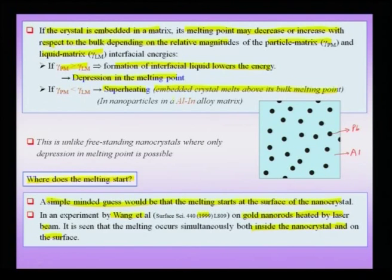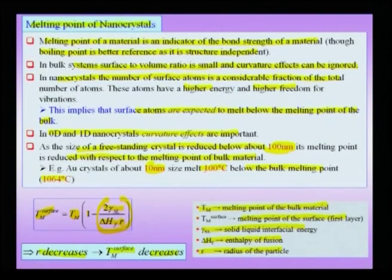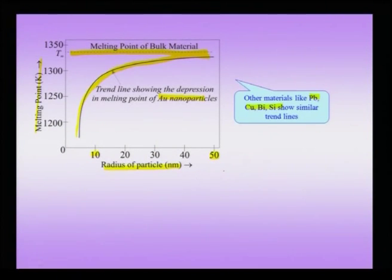Superheating is observed in, for example, an aluminum-indium alloy matrix. To summarize the slides on melting: free-standing nano crystals show a depression in the melting point — about 100 degrees, or roughly a 10 percent reduction at 10 nanometer size. The current understanding is that the entire nano particle melts at a single temperature rather than by surface-inward melting. Third, if the nano crystal is embedded in a matrix, there can be either elevation or depression in the melting point depending on the relative interfacial energies between the crystal and the matrix.